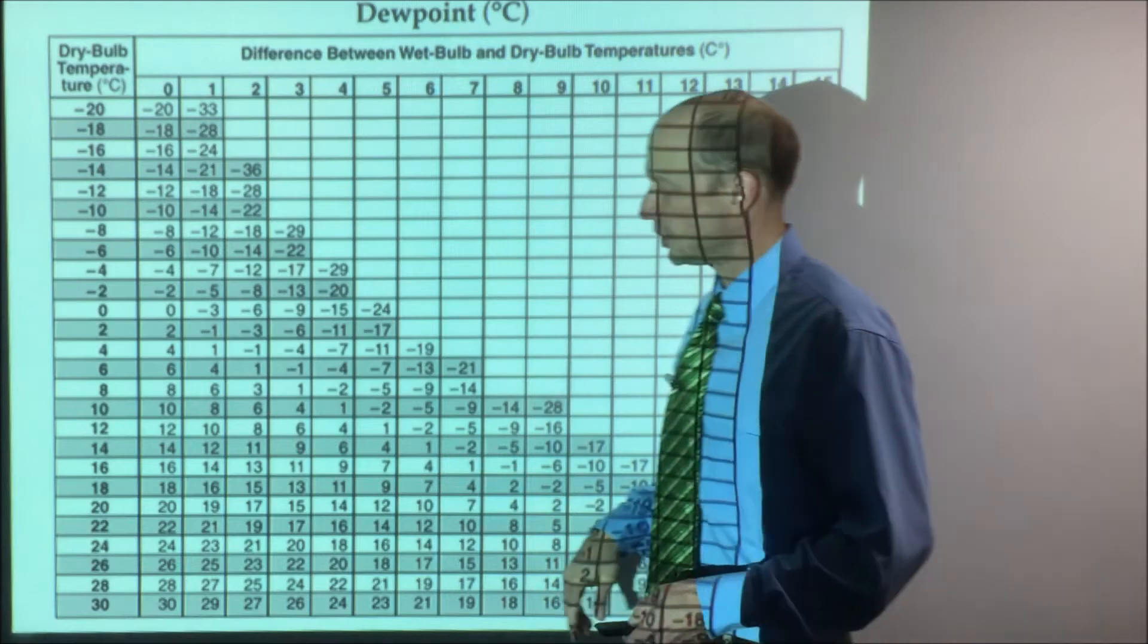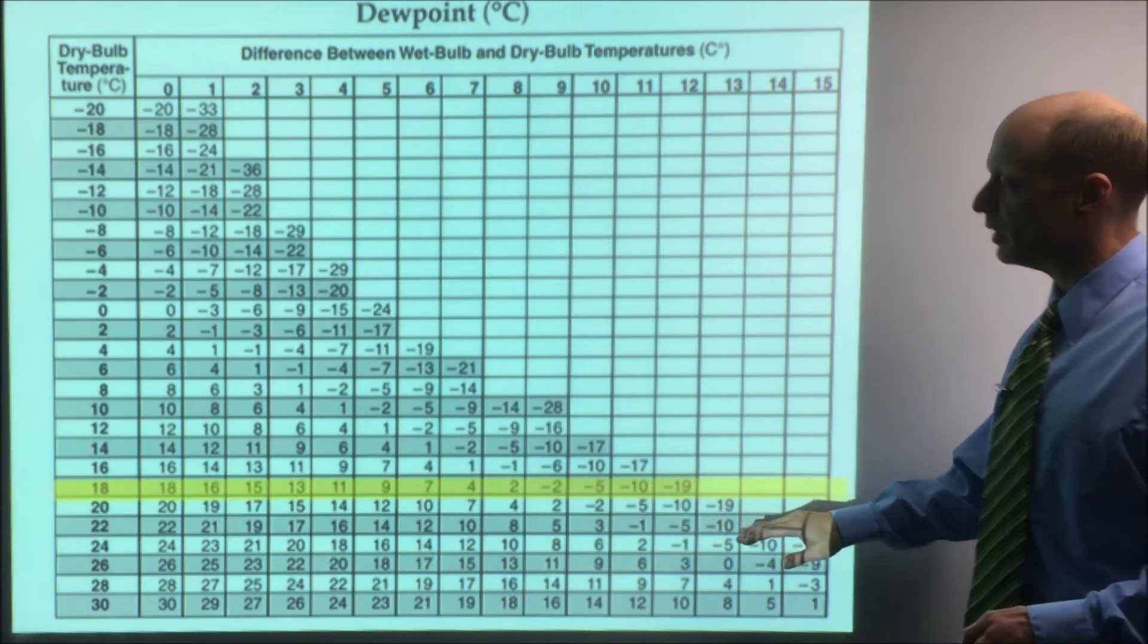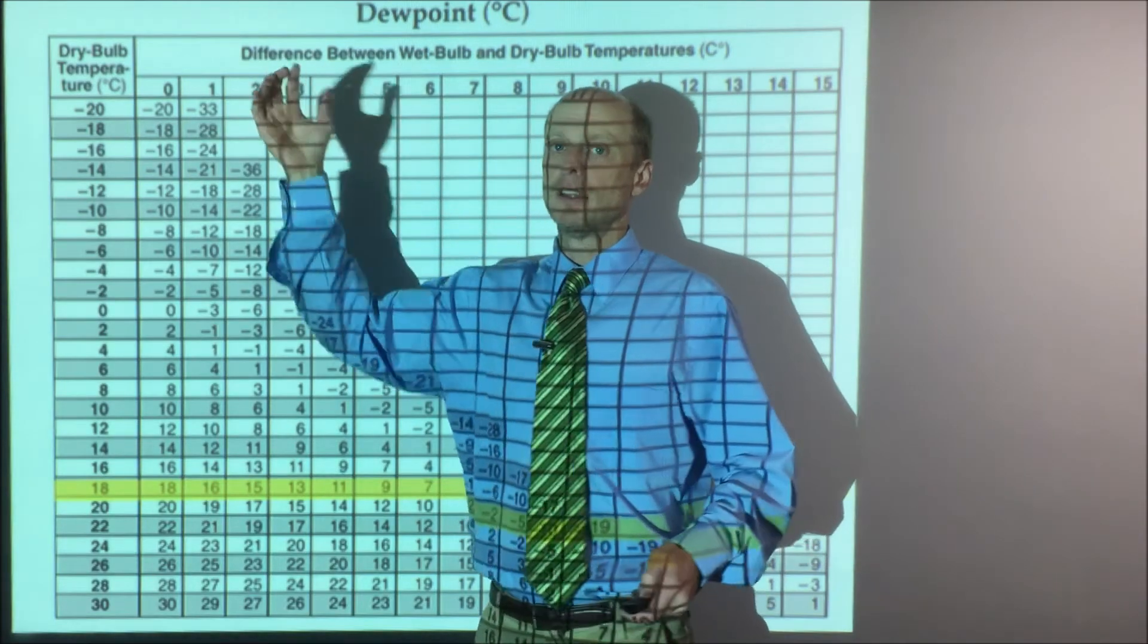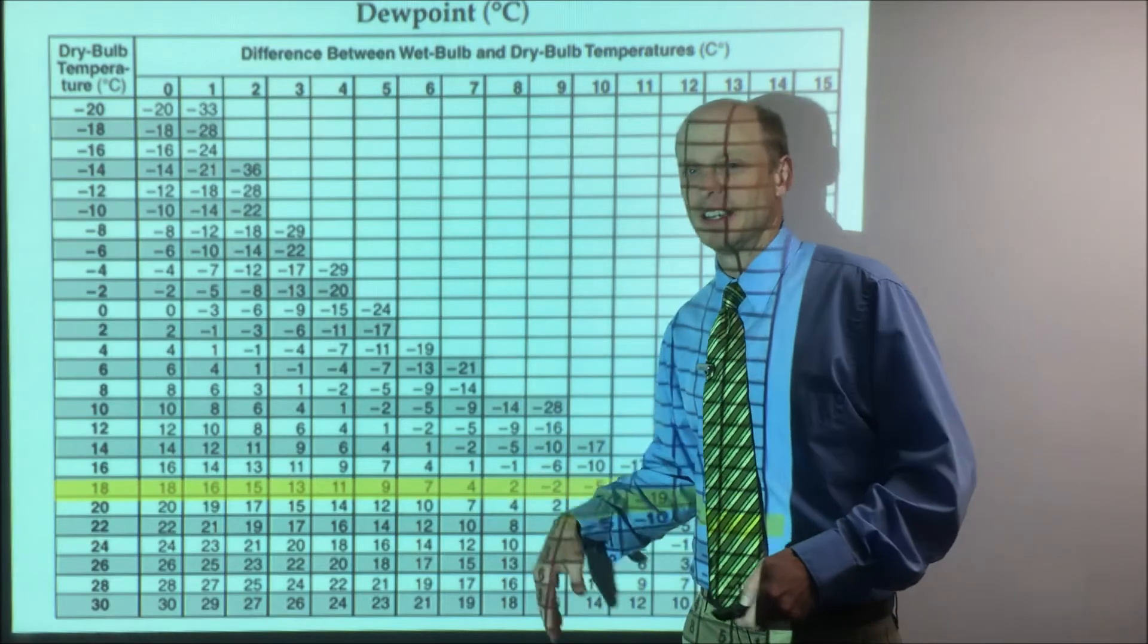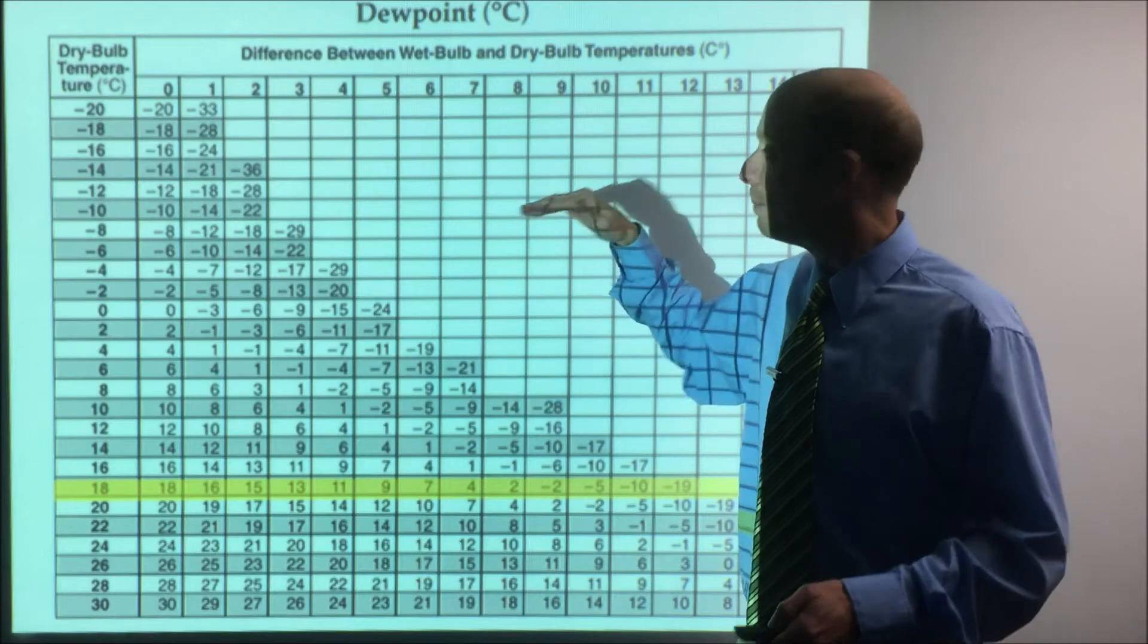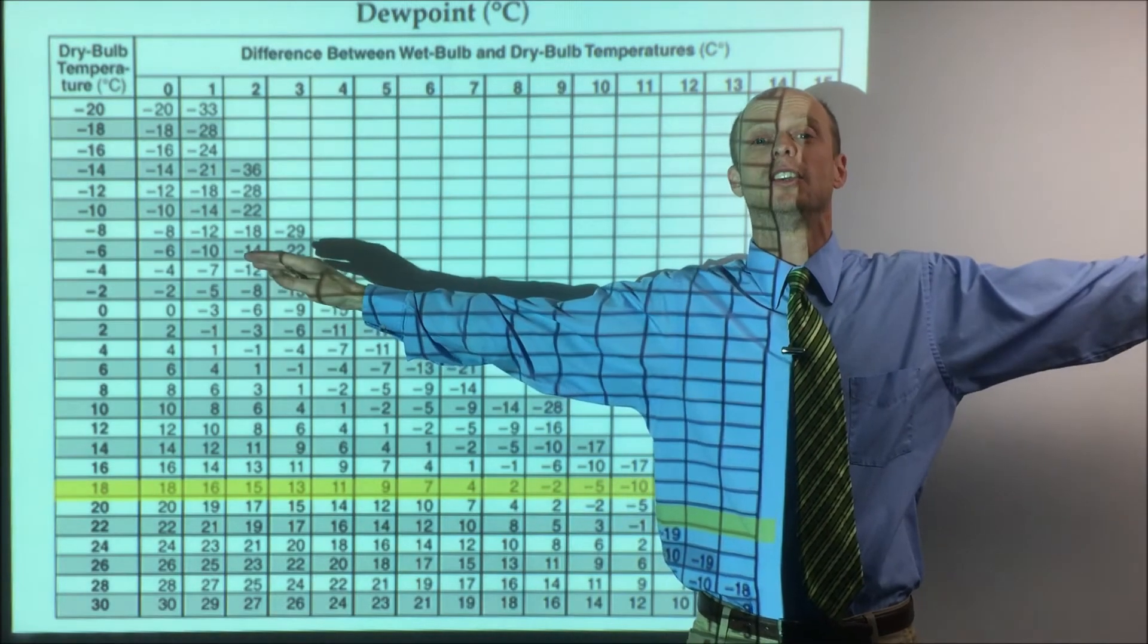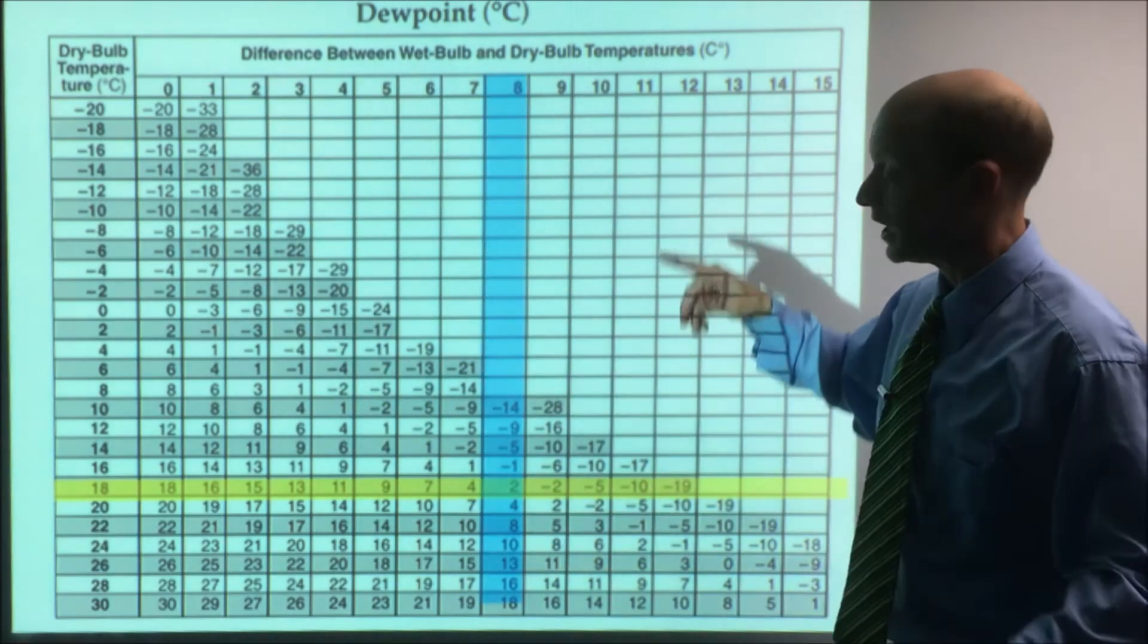So we said the dry bulb temperature is 18. So what I'm going to do is it's somewhere in this row. And then you got to please note that's the difference. Too many people, I've seen this thousands of times. I've seen kids go and immediately just go to the wet bulb temperature, which in our case was 10. And they go down this column. That is wrong. Don't do it. The key thing is that that's the difference. In our case, it was eight. So it's this column.